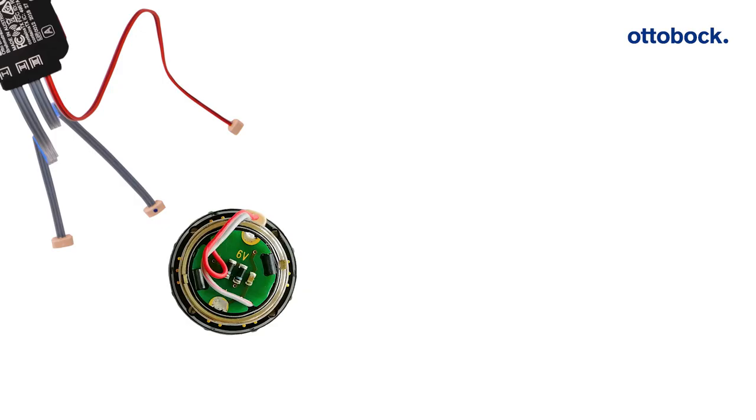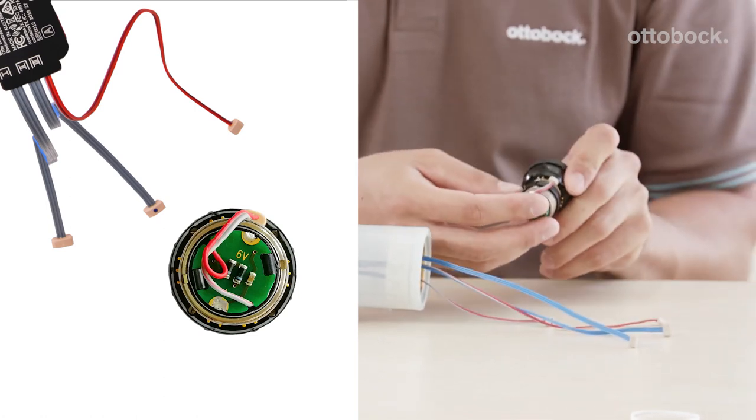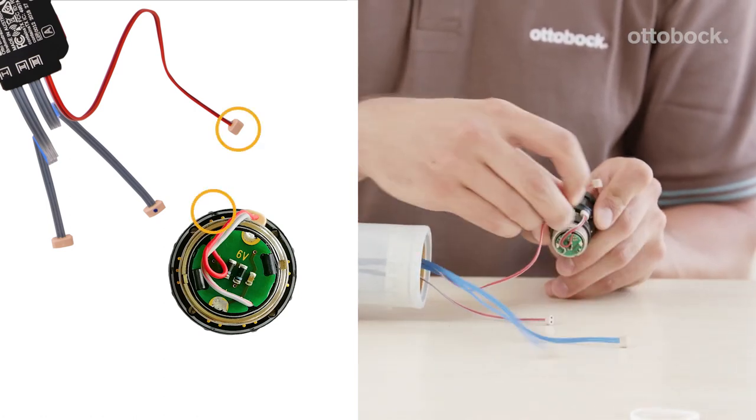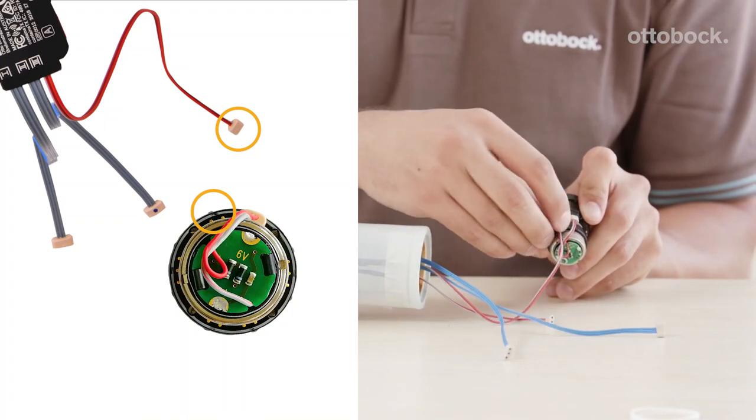Note, the wiring of the electric wrist rotator is identical for left and right hand prostheses. Connect the two-polled cable of the Myo Plus TR to the left number 3 contact.